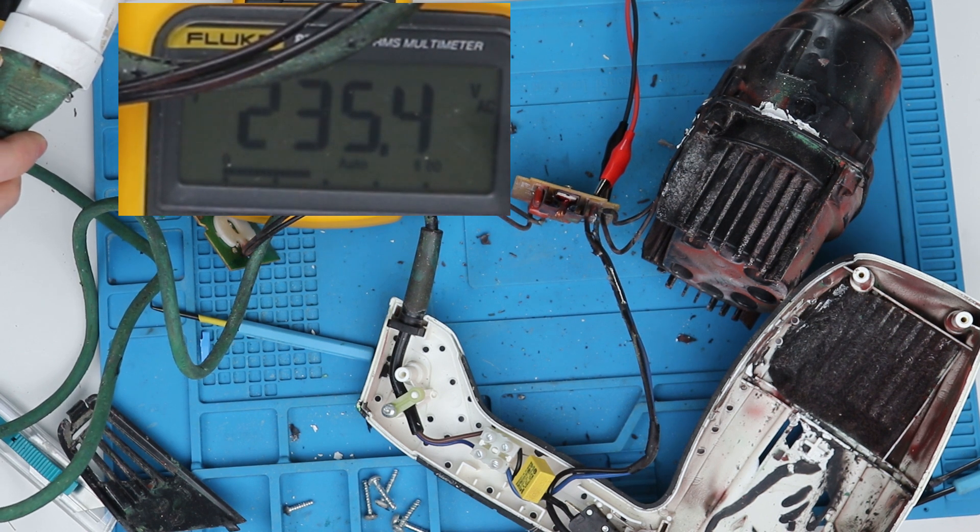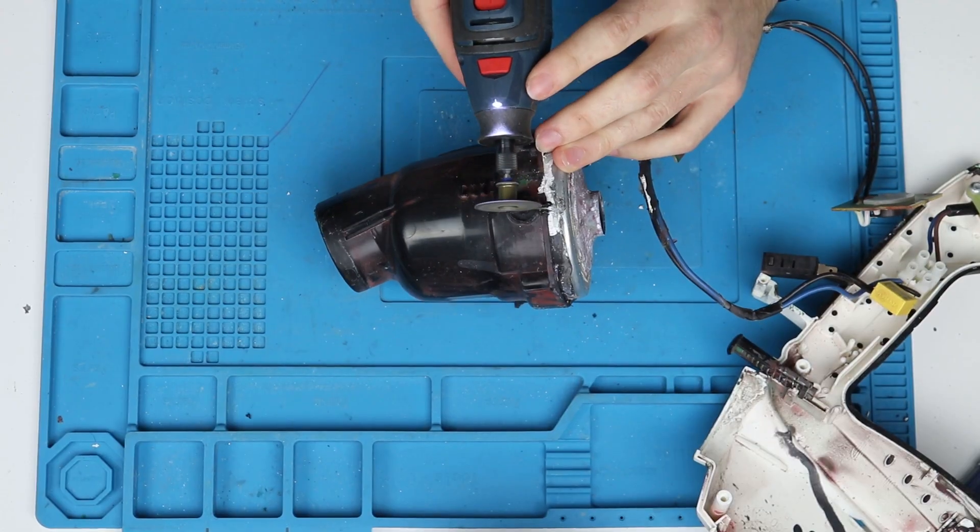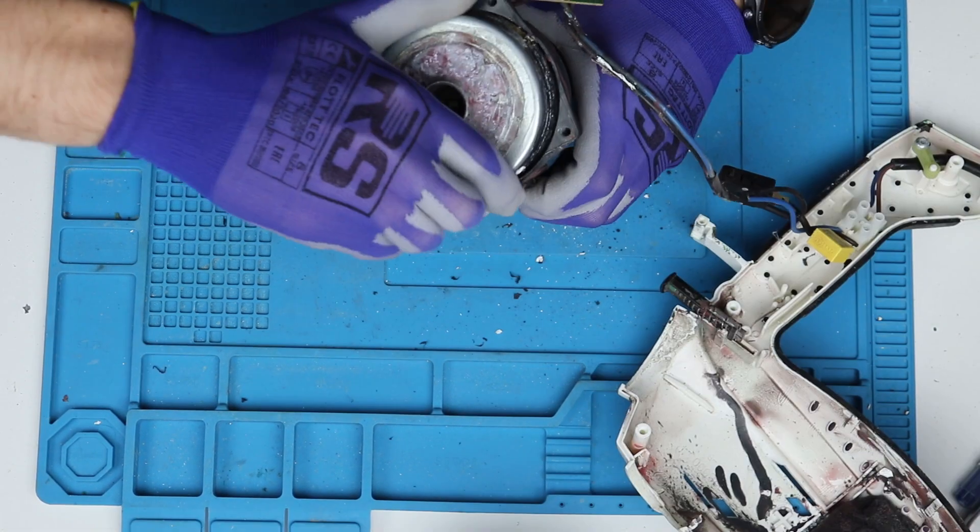With everything looking good, we need to dig deeper. Since the plastic is glued to the motor case, we need to use a rotary tool to cut the plastic.